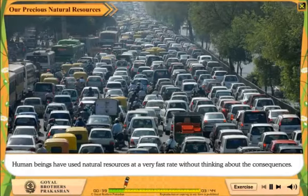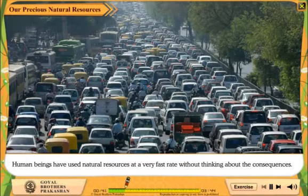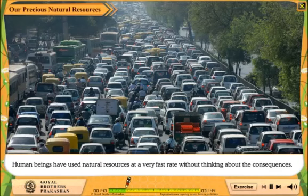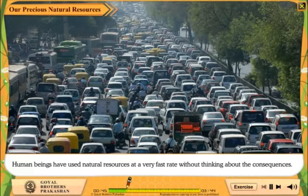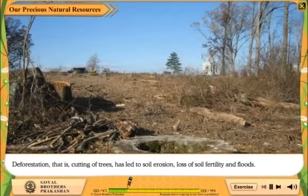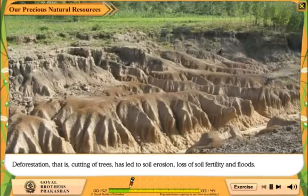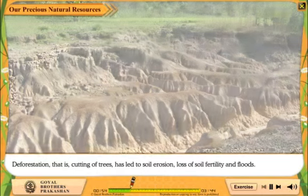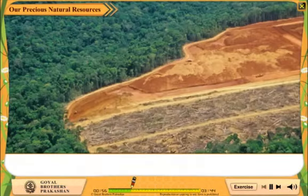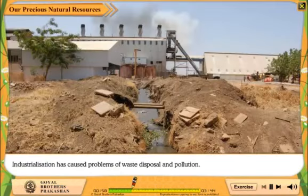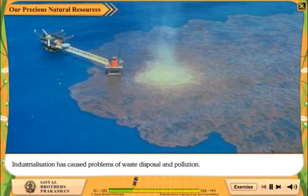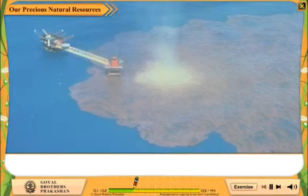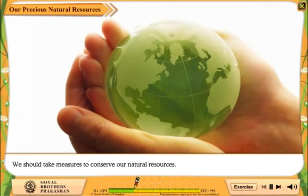Human beings have used natural resources at a very fast rate without thinking about the consequences. Deforestation, i.e. cutting of trees, has led to soil erosion, loss of soil fertility and floods. Industrialization has caused problems of waste disposal and pollution. We should take measures to conserve our natural resources.